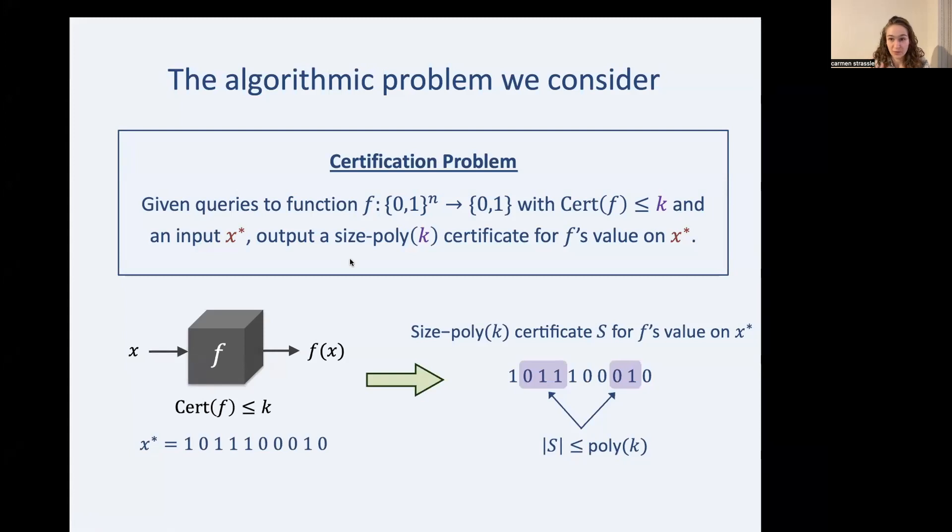We have an input x, a black box f, and we're able to make queries to that. We're given a promise that its certificate complexity isn't too large, and we're given x star. And all we want to do is output a size poly k certificate S for f's value on x star.